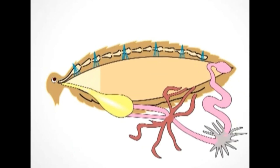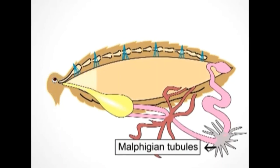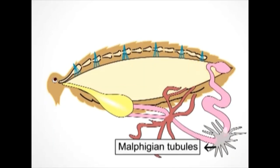In cockroach, blood does not have hemoglobin and is colorless. It does not help in the transport of oxygen, but it helps in the distribution of nutrients to various organs and carries waste from the various organs to the excretory system, that is, the Malpighian tubules.